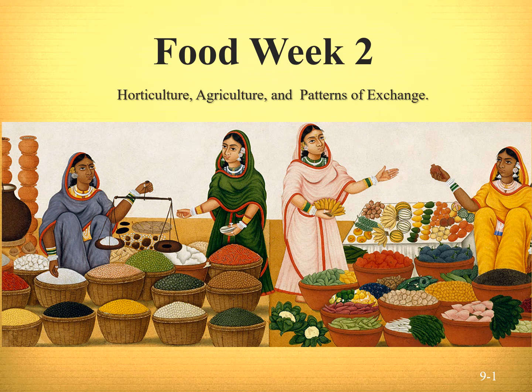Hello anthropologists, we're continuing with subsistence patterns today, going into horticulture and agriculture. Once you have agricultural systems, patterns of exchange become much larger and we start to work on symbolic systems of currency and market economy. Remember last week we discussed foragers and hunter-gatherers who had a semi-egalitarian or egalitarian society where everybody shared what they had and received what they needed — that is generalized reciprocity, just like in a family. In a market exchange system we have something called balanced reciprocity.